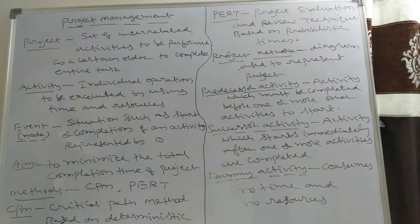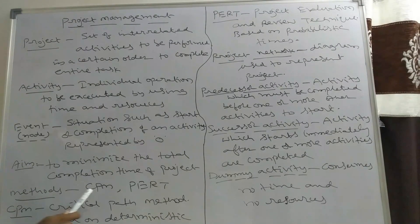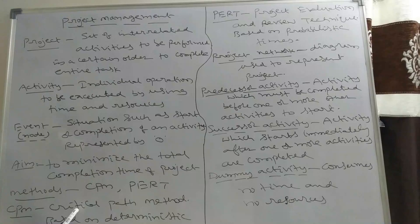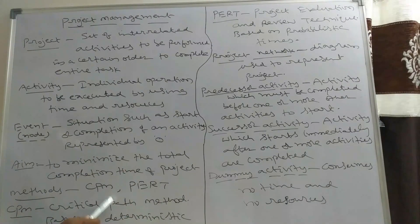What are the methods used in this topic? There are two methods: CPM and PERT. CPM is the Critical Path Method — C for Critical, P for Path, M for Method.